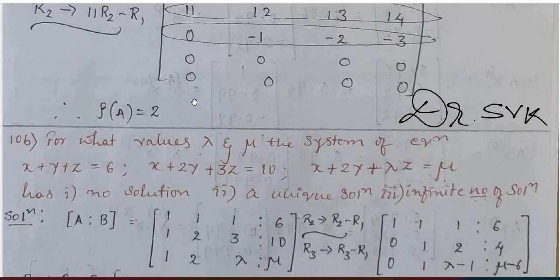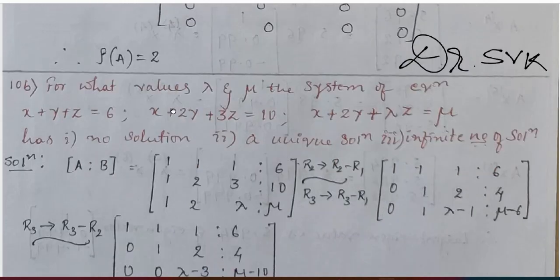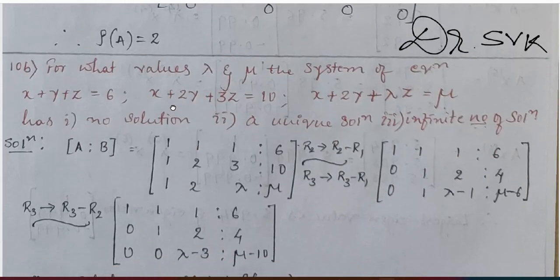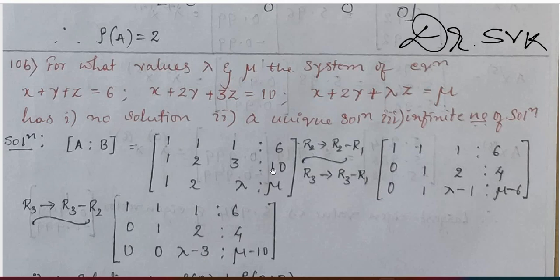This carries 6 marks. Moving on to question number 10b: given the system of equations, this is a consistency problem. We are required to find out whether there is no solution, a unique solution, or an infinite number of solutions depending on the values of lambda and mu.